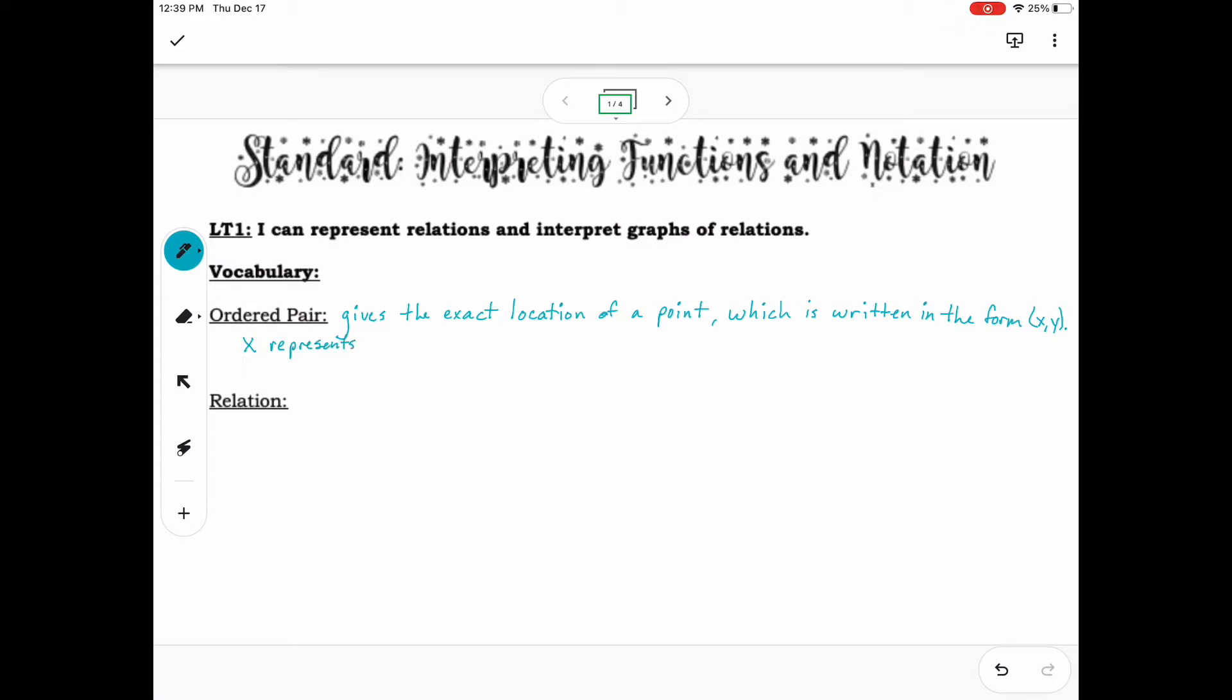x represents the location of the point in regards to the x-axis. y represents the location of the point in regards to the y-axis. A relation is a set of ordered pairs.